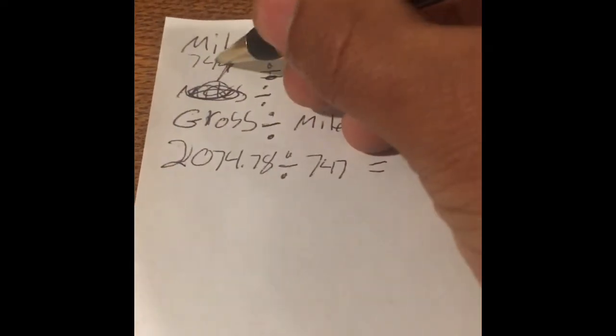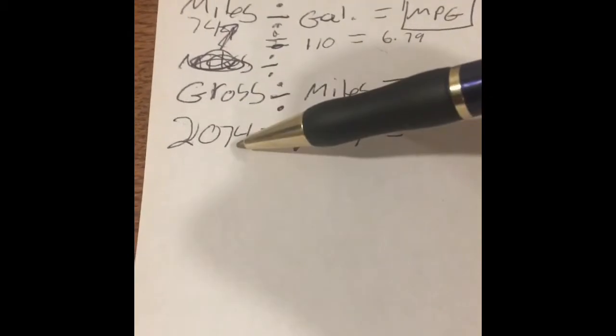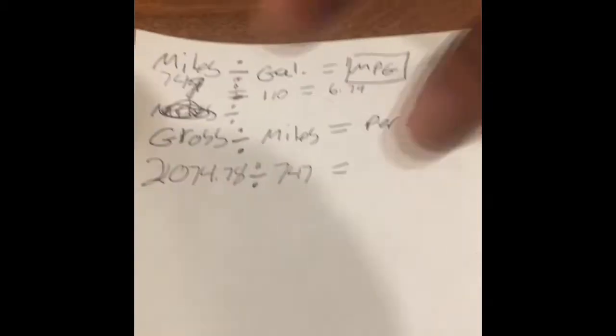So I put on 747 miles, which equals... So my gross revenue, which is right here, $2,000, a little more than 747.